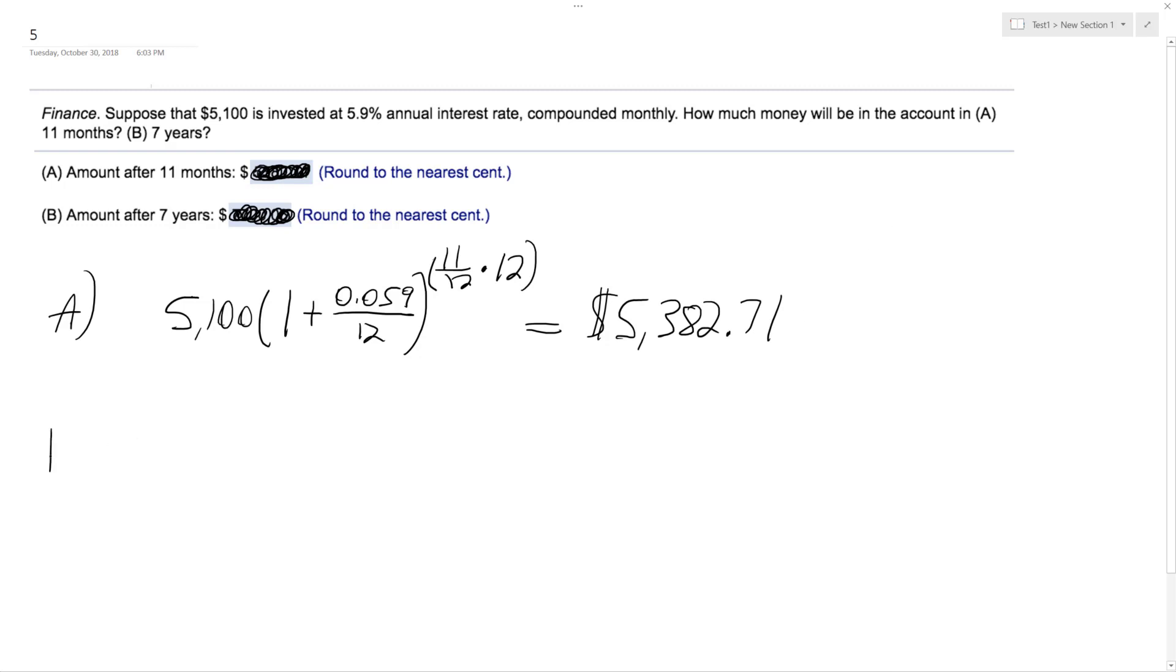So for part B, we get 5,100 times 1 plus... this is seven years, so it's the exact same thing, but there's a large difference here. Instead of 11 over 12,